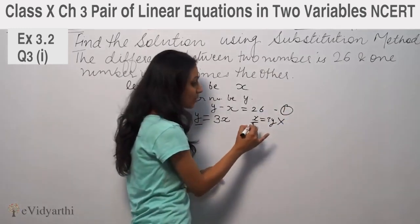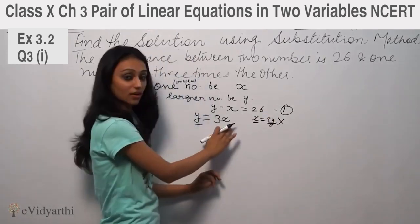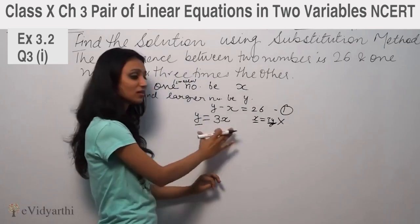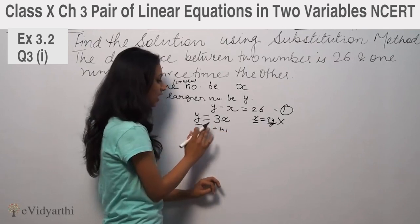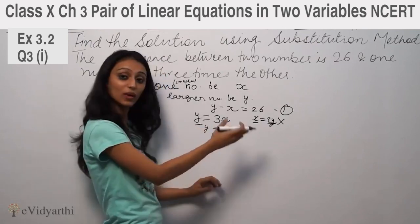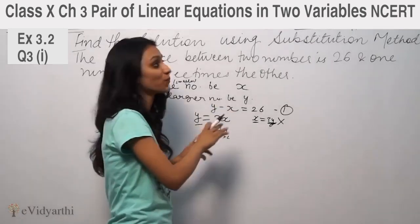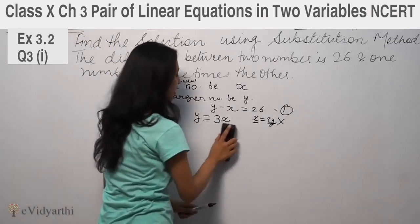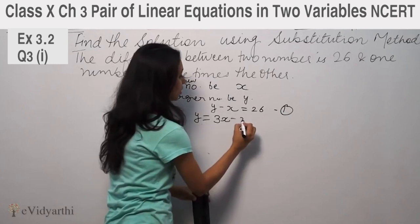So if y is 3 then x would be 1, if y is 6 then x is 2. So our second equation is y is equal to 3x. This is my second equation. Substituting this value,